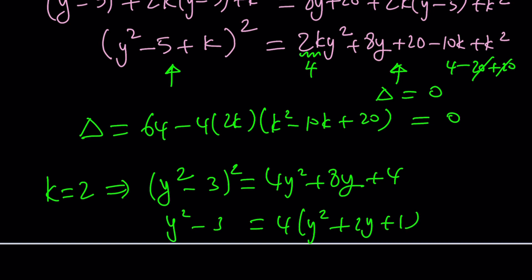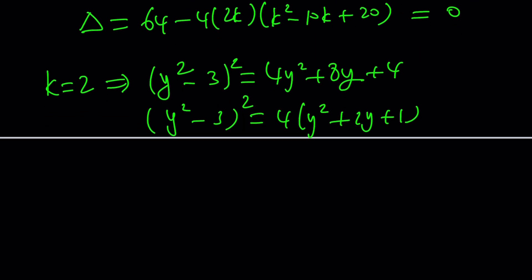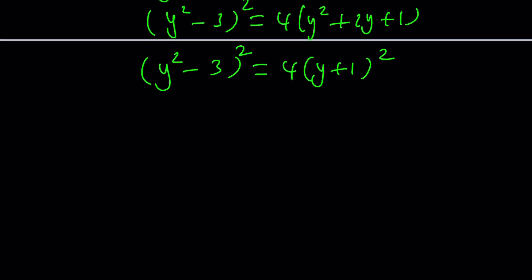Now we can write this as y squared minus 3 quantity squared equals 4 times y plus 1 quantity squared. Whether you go with the difference of two squares or you can just square root both sides and go with the absolute value, you're going to be getting two solutions like this: this one and this one. And then from here you're going to get the y values. The rest is easy, I'm going to leave it up to you.